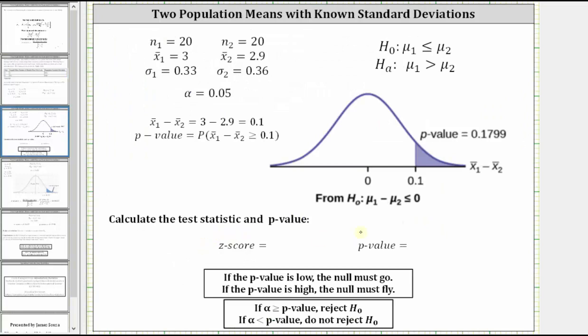Before we determine the z-score and the p-value using the TI-84, let's take a look at this graph shown here above. This is a distribution for x̄₁ minus x̄₂. So if there's no difference between the means, the difference is zero, which is why we have zero at the center of the distribution. And now if we find the difference of the sample means, we have 3 minus 2.9, which equals 0.1, which is why we have 0.1 marked off here on the horizontal axis. Therefore the p-value equals the area under the curve shaded to the right of 0.1, which also indicates the p-value equals the probability the difference of the means is greater than or equal to 0.1.